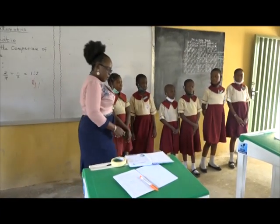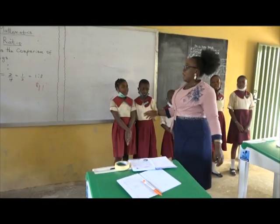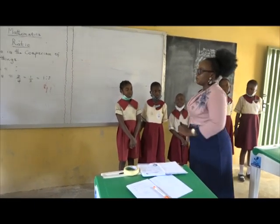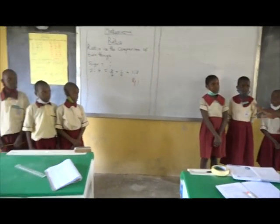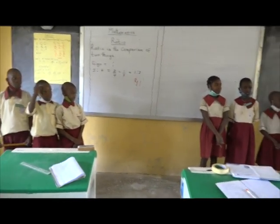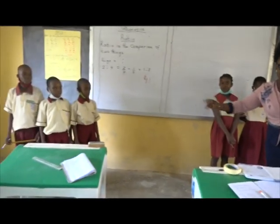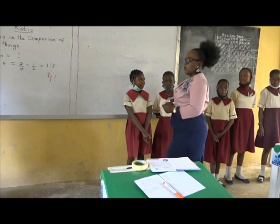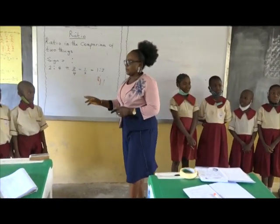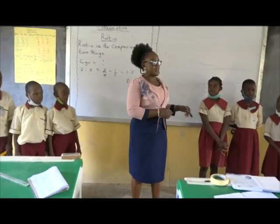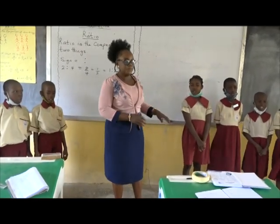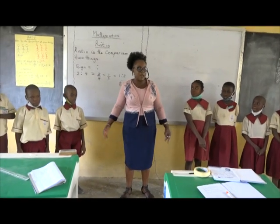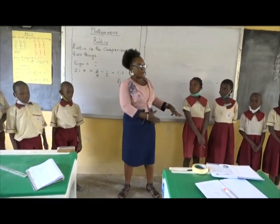Now we want to compare the number of the pupils in the class. In front of us we have three boys and six girls. How many boys do we have here? Three boys. How many girls? Six girls. The ratio of boys to girls is three ratio six — we are comparing two things together.